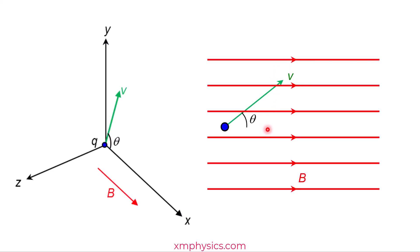We are going to resolve this vector into a component parallel to the magnetic field, and a component perpendicular to the magnetic field. The horizontal component is of course V cosine theta, and the perpendicular component is V sine theta.